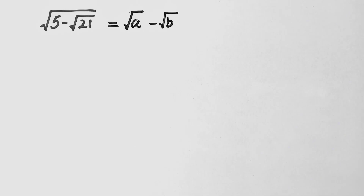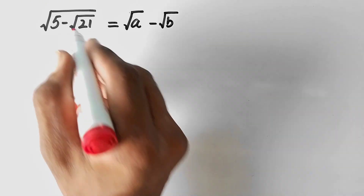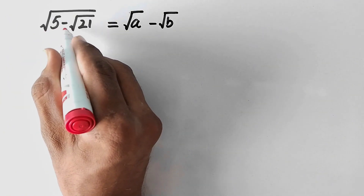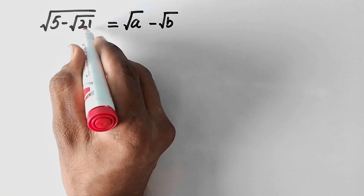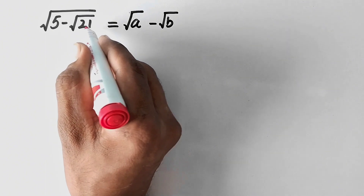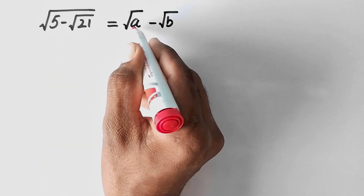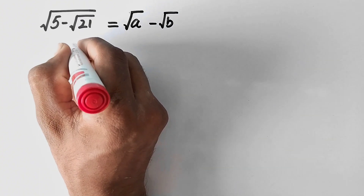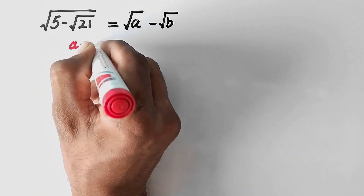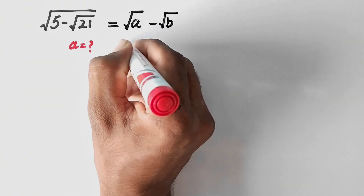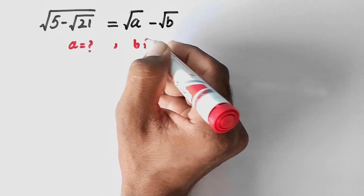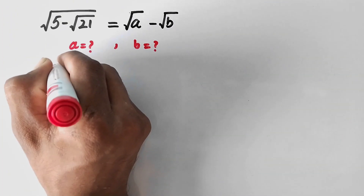Hello everyone, welcome to ExplodeMaths. Today we are going to solve the question: is √(5 - √21) equal to √A - √B, and we have to find the values of A and B. Let us see the solution.